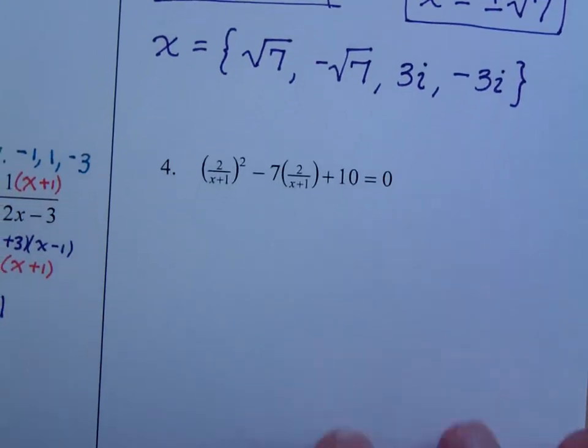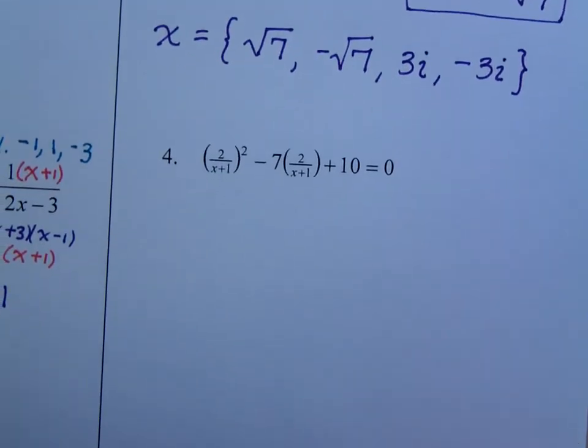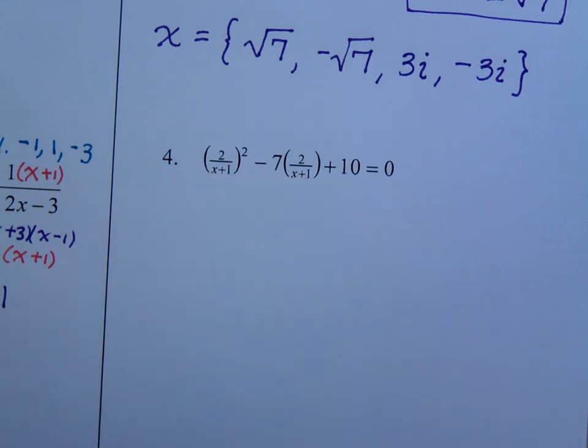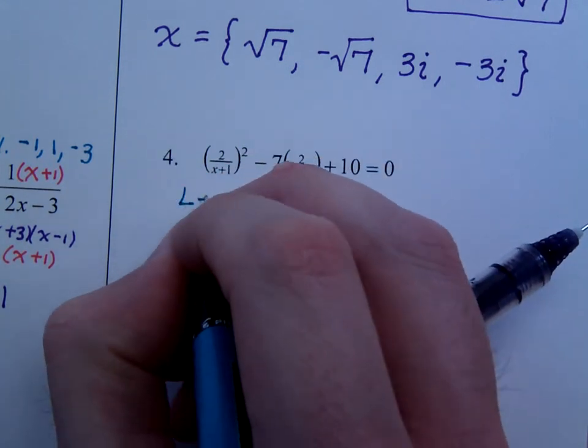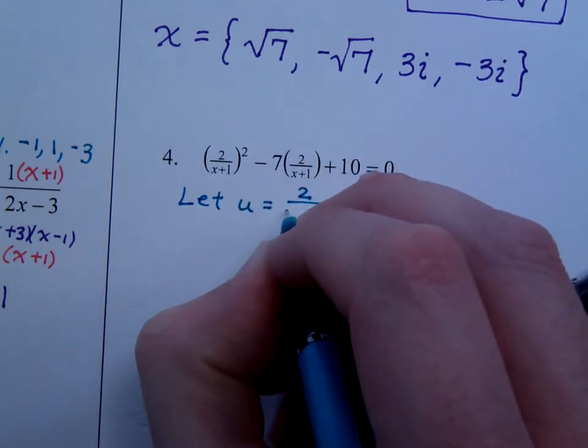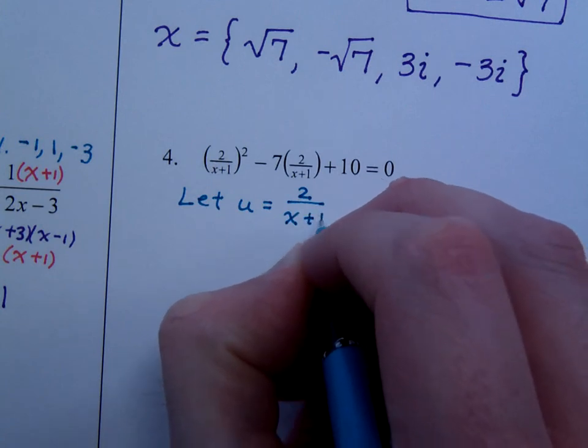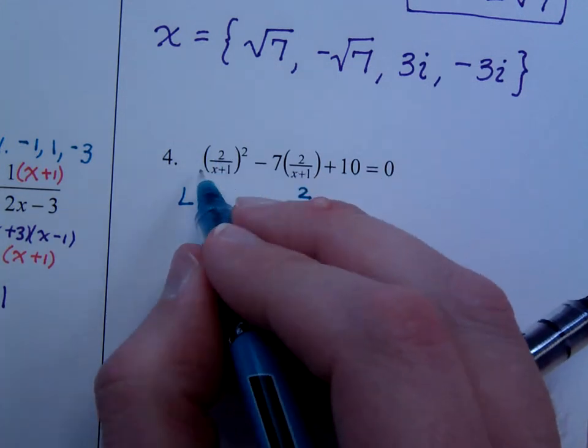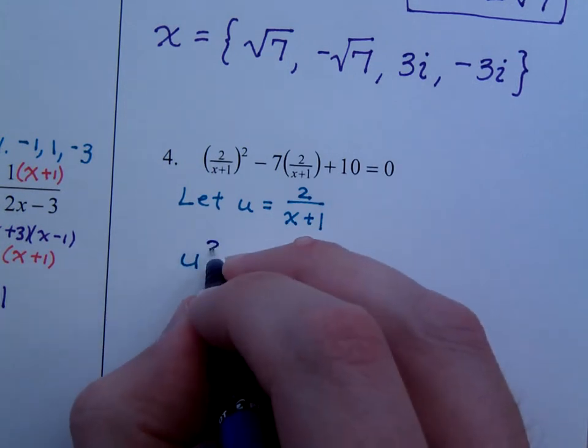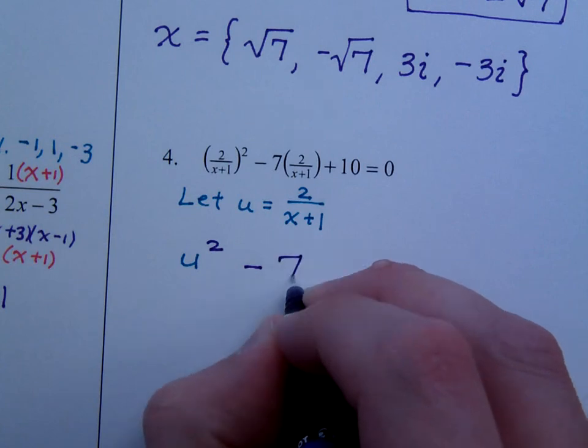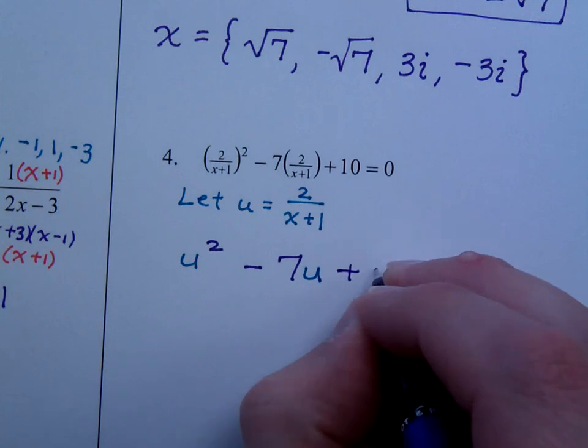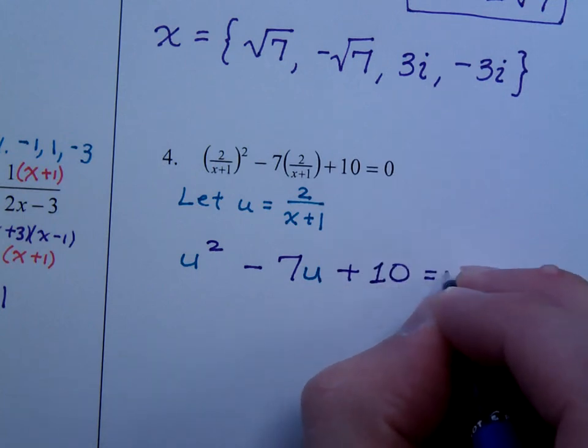This next problem is a little bit more difficult. You see that you have the same expression in each of these. We're going to do what's called a u substitution, so check this out. I'm going to let u equal this complicated looking expression, which is 2 over x plus 1. When I do that, this guy right here becomes u squared minus 7, this guy is now u plus 10 is equal to 0.